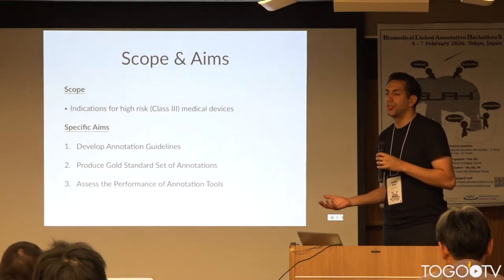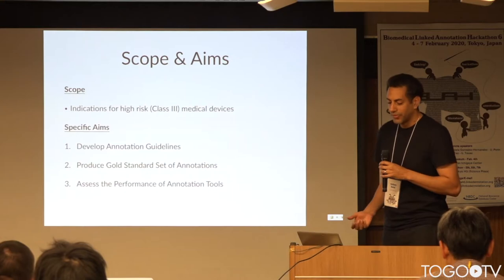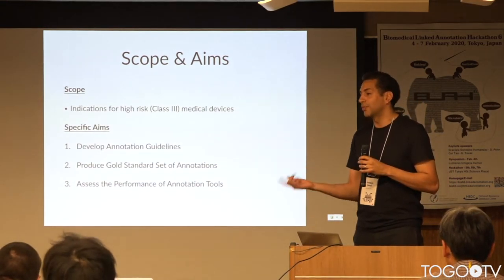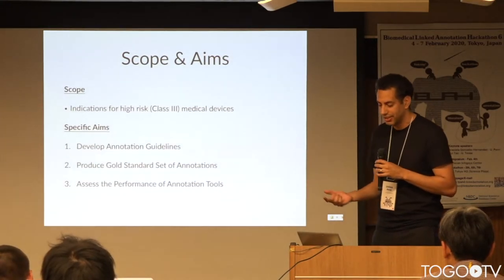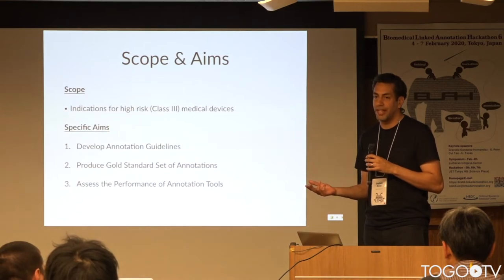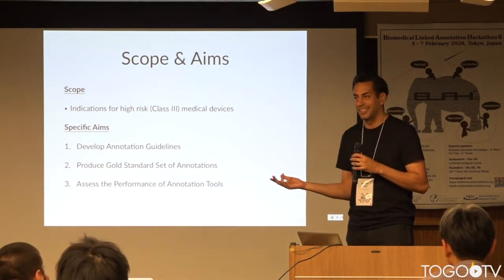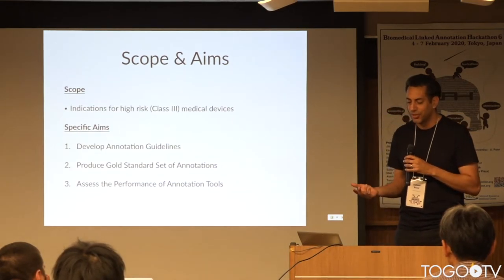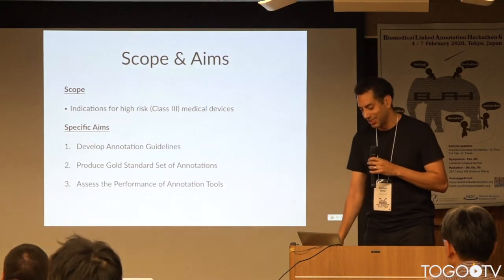That brings us to what I'm proposing for the project. Aim one is to develop annotation guidelines for medical device indications. Aim two is to produce a small, modest gold standard set of annotations — maybe 20 to 50 indication statements, nothing huge. And aim three is to assess the performance of some of these annotation tools.